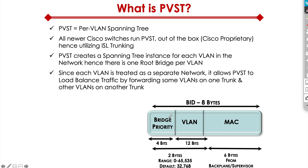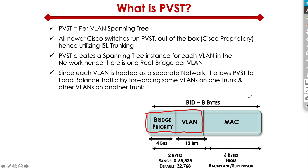From a layer 2 standpoint, if you recall, the regular spanning tree — which is called CST or Common Spanning Tree — had a bridge priority field. There was no VLAN idea there. That whole field was bridge priority, and then to the right was MAC. But with PVST, we still have the bridge priority field, but we also insert in the middle a VLAN field.